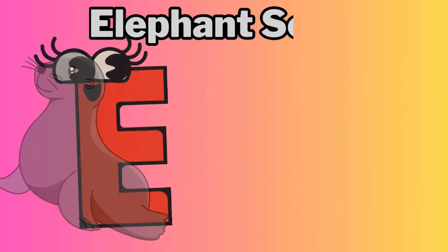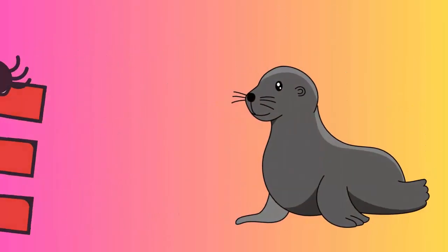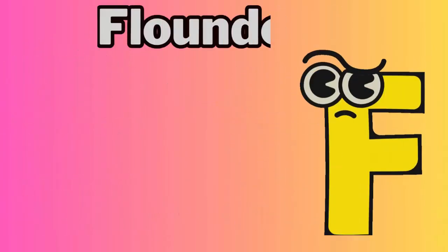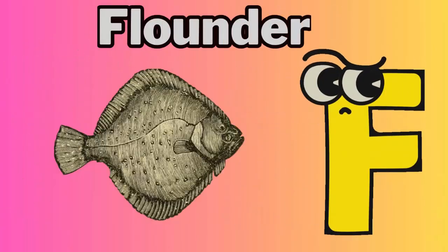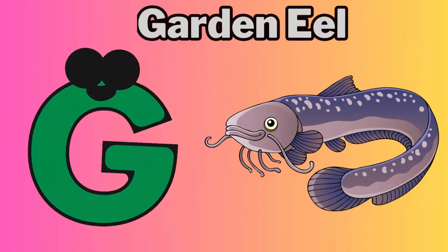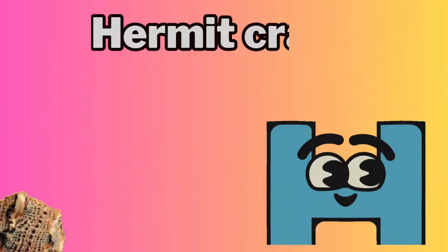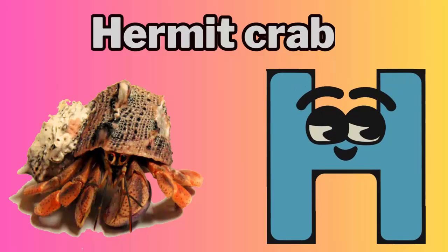E for elephant seal, F for flounder, G for garden eel, H for hermit crab.